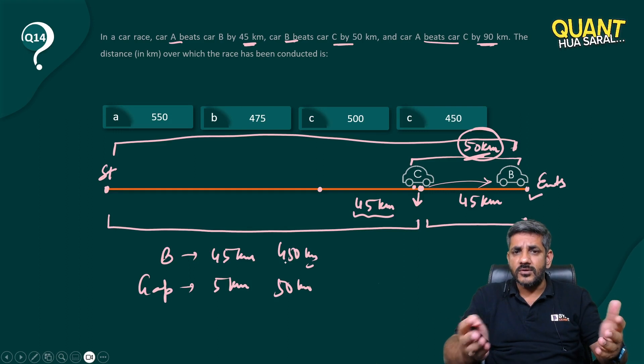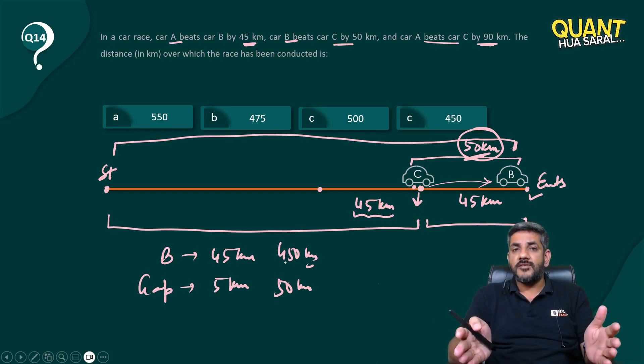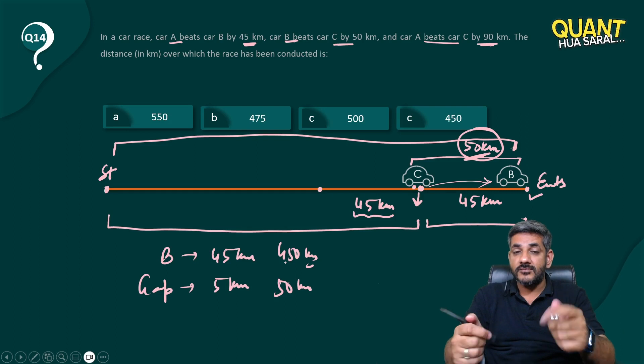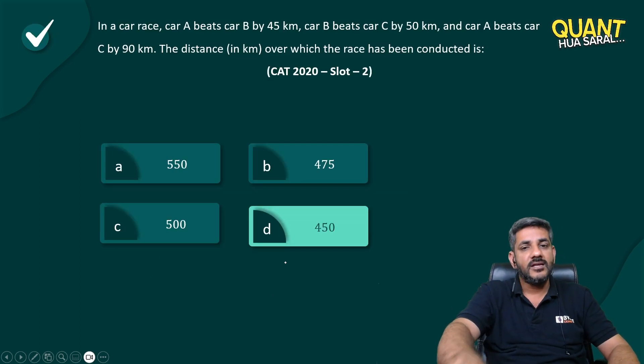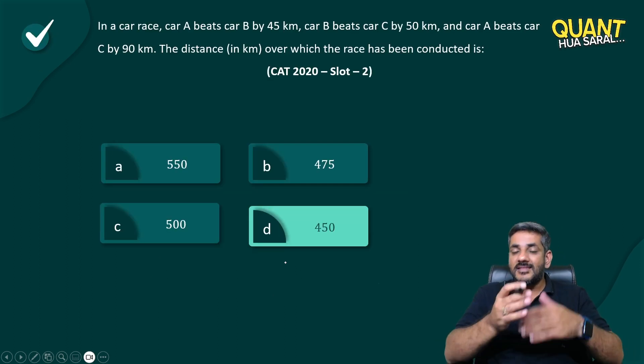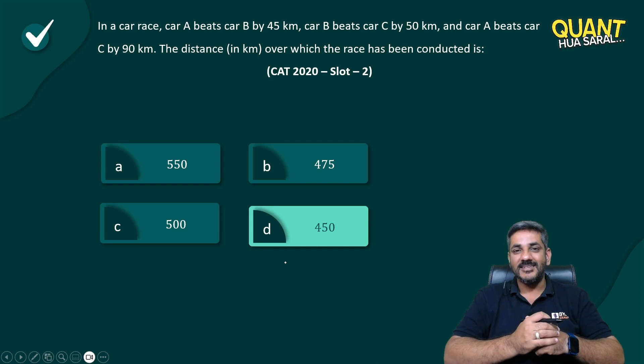This is what the question is asking you - to create a total gap of 50, how much would B have run? That's what we call as the length of the race. The correct answer for this question is 450 kilometers. This is what we call as aptitude. Thank you very much.